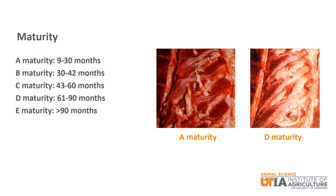You can see in the picture that the bones for A maturity are much redder than for D maturity, which are more ossified and thus are whiter in color.